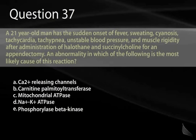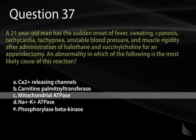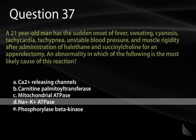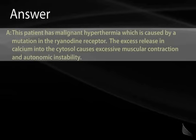Question 37. A 21-year-old man develops sudden fever, sweating, cyanosis, tachycardia, tachypnea, unstable blood pressure, and muscle rigidity after administration of halothane and succinylcholine for an appendectomy. An abnormality in which of the following is most likely responsible? A, calcium-releasing channels. B, carnitine palmitoyltransferase. C, mitochondrial ATPase. D, sodium-potassium ATPase. Or E, phosphorylase beta kinase? This clinical picture is malignant hyperthermia, due to a mutation in the ryanodine receptor — the calcium-releasing channel of the sarcoplasmic reticulum — often triggered by halothane and succinylcholine. The correct answer is A, calcium-releasing channels.